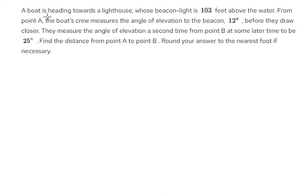A boat is heading towards a lighthouse whose beacon light is 103 feet above the water. From point A, the boat's crew measures the angle of elevation to the beacon at 12 degrees. Before they move closer, they measure the angle of elevation a second time from point B to be 25 degrees. Find the distance from point A to point B. Round your answer to the nearest foot if necessary.